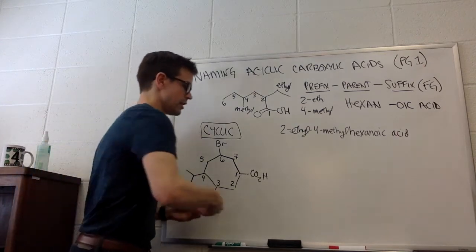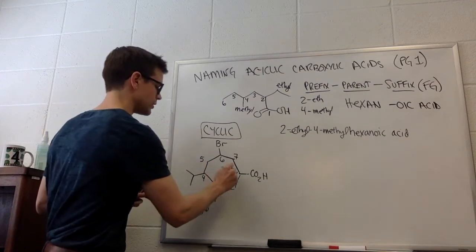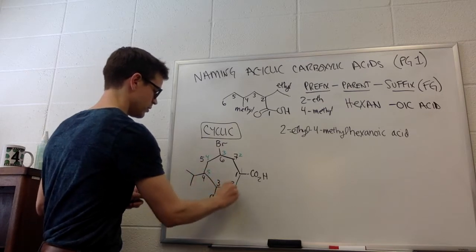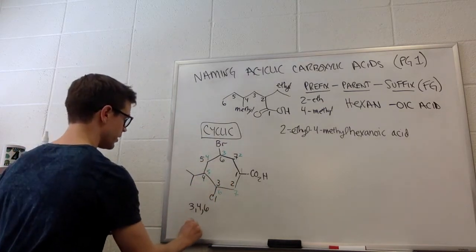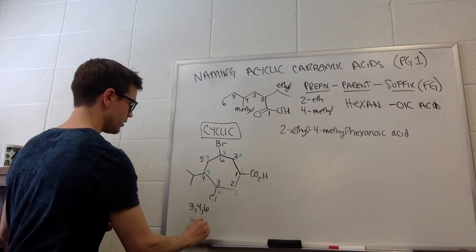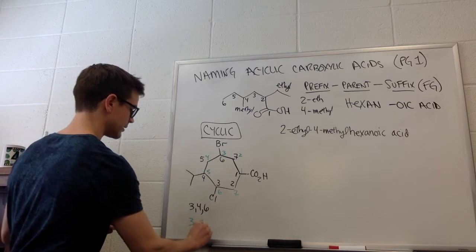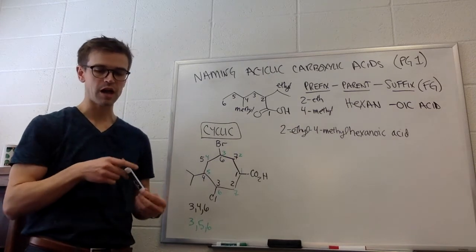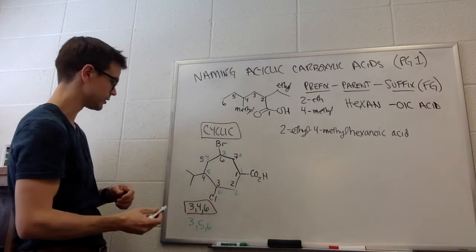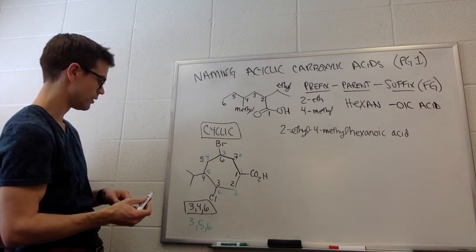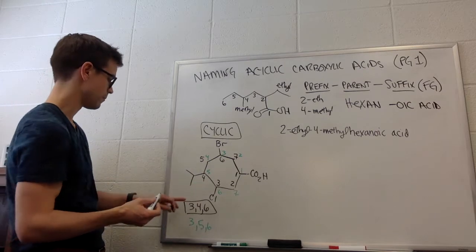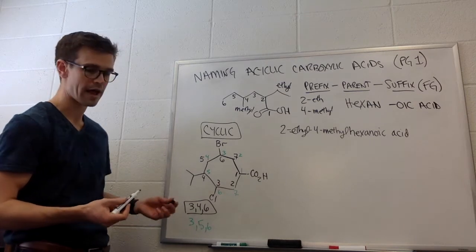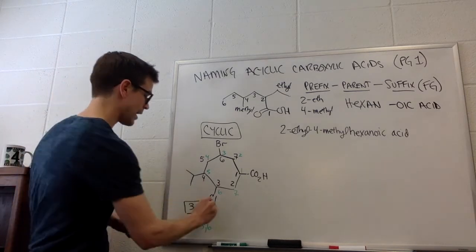If we were to number counterclockwise, and I'm going to number in green, the substituents would be three, five, and six. So, looking at that rule, number to get the lowest possible combinations of numbers, this combination of numbers is lower than, yeah, this one's lower than the three, five, six. If you add these numbers up, they add to a larger number than that. So, we're going to do the black numbering around this ring.